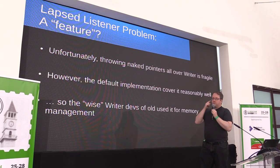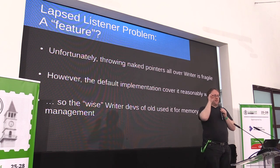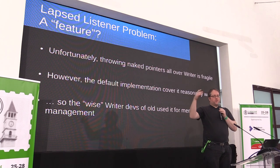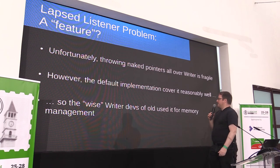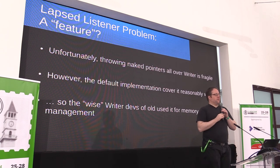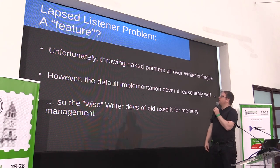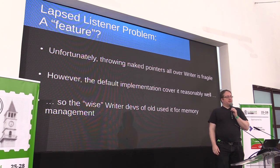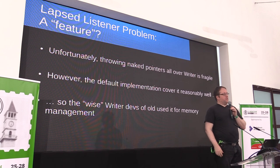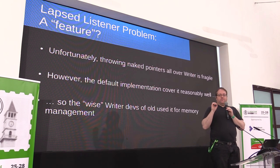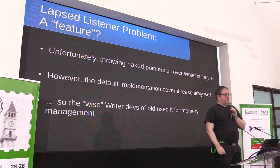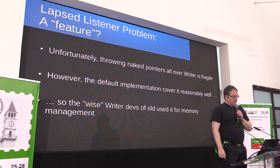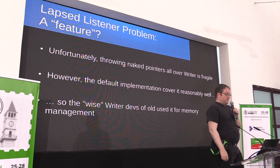Finally, a common problem with these event handles is that the object and the listener — somehow the listener forgets to pre-register, causing a memory leak. The wise writer of ancient times called this a feature, not a bug, and actually used the SW client/modify mechanism mostly for memory management: you just have a helper that listens to the dying of the modifier and the client puts itself there. So a lot of memory management in Writer actually goes this way.